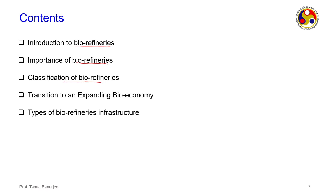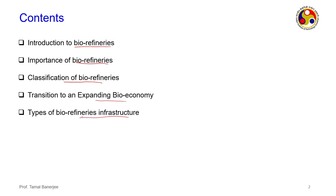We will see what types of products we obtain from a biorefinery and then classify the biorefineries — why they are important. Then transition to an expanding bioeconomy: how we can take this up within the existing setup, potentially without making new plants. There are different types of biorefinery which can use a similar plant or be set up at a co-generation facility.